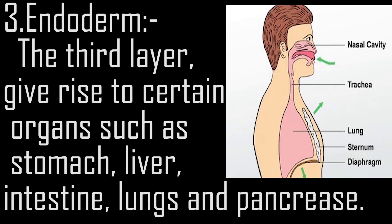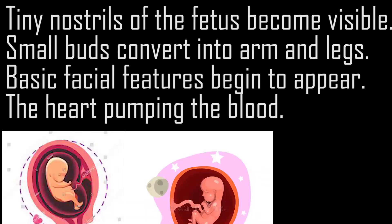3. Endoderm — the third layer — gives rise to certain organs such as the stomach, liver, intestine, lungs, and pancreas. Additionally, tiny nostrils of the fetus become visible, small buds convert into arms and legs, basic facial features begin to appear, and the heart begins pumping blood.